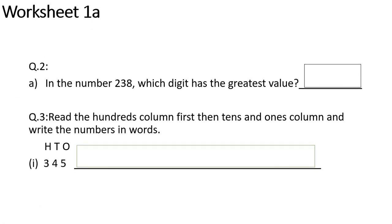This is Worksheet 1A again, question number 2. Part A: in the number 238, which digit has the greatest value? We will see how many hundreds in 2: 200. How many tens in 3: 3 tens. How many ones in 8: 8 ones. So which digit has the greatest value? 2 — because 2 is in the hundreds place, worth 200.